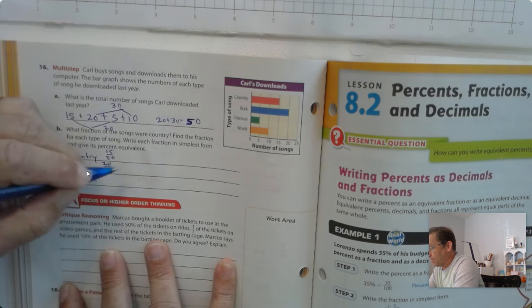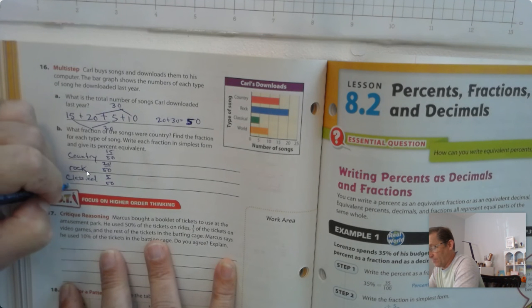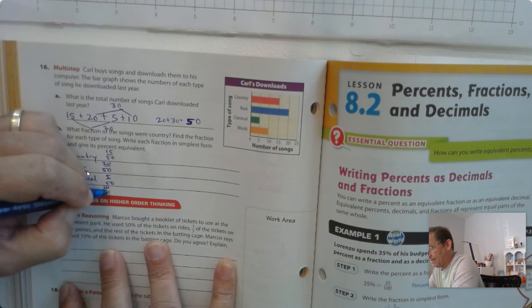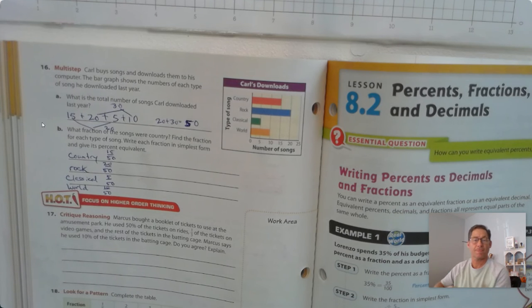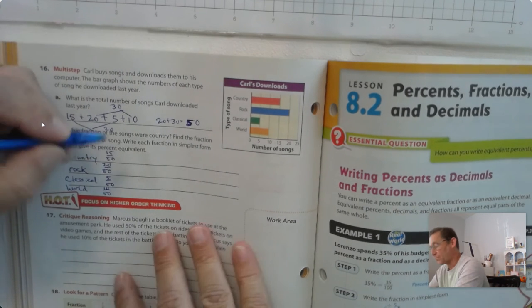So country was 15 out of the 50. Classical was 5 out of 50. And world music was 10 out of 50.